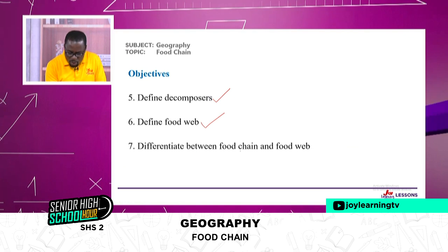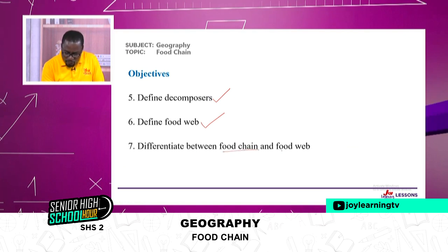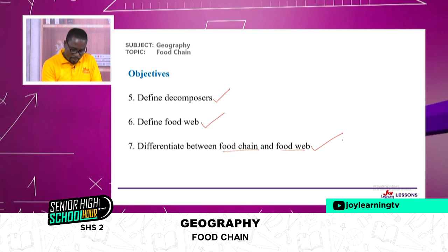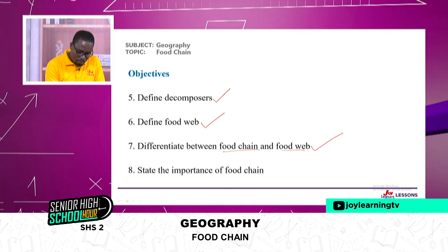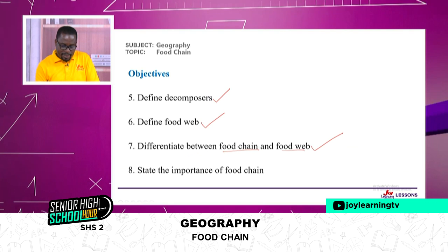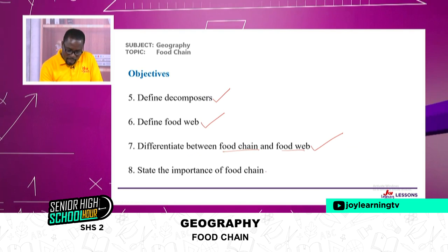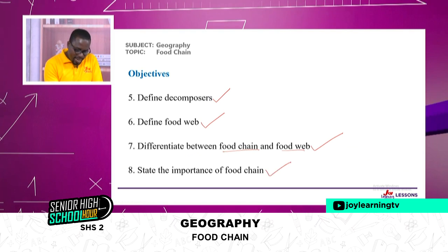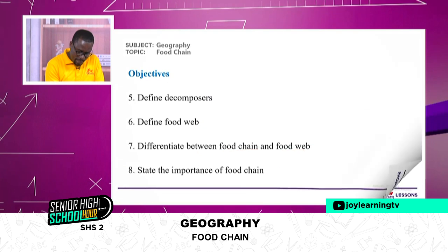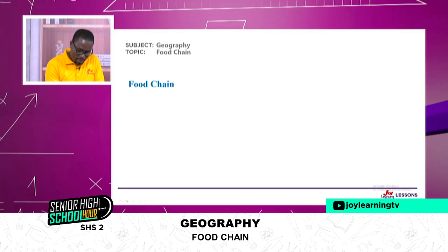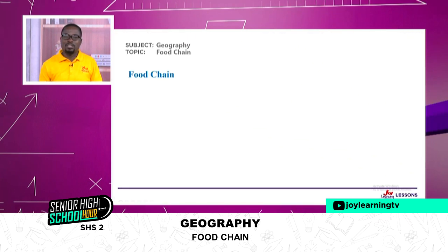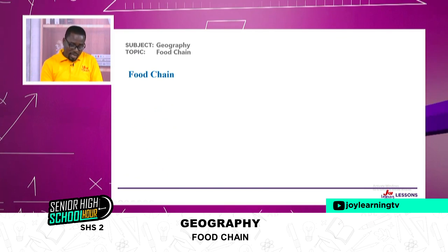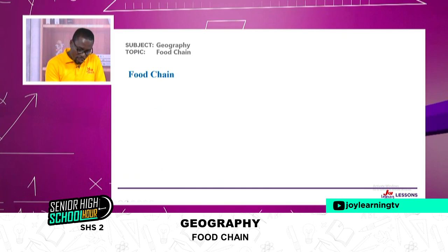Differences between food chain and food web — we do that. Objective number eight: state the importance of food chain. So we have eight objectives, and I'm sure by the time we are done you'll be able to do that.